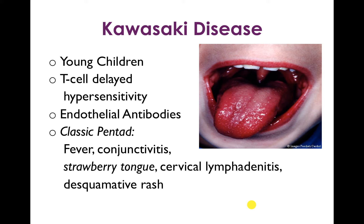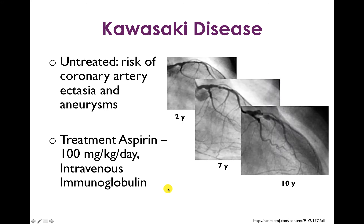Kawasaki disease is typically a disease of very young children, around two to five years old. It's mediated by a T-cell delayed hypersensitivity reaction and is thought to involve endothelial antibodies. There's a classic pentad: fever, conjunctivitis, strawberry tongue, cervical lymphadenitis, and a desquamative rash. The main complication of untreated Kawasaki disease is coronary artery ectasia and aneurysms. Treatment when diagnosed is high-dose aspirin at 100 mg per kg per day, and intravenous immunoglobulin also has a role.